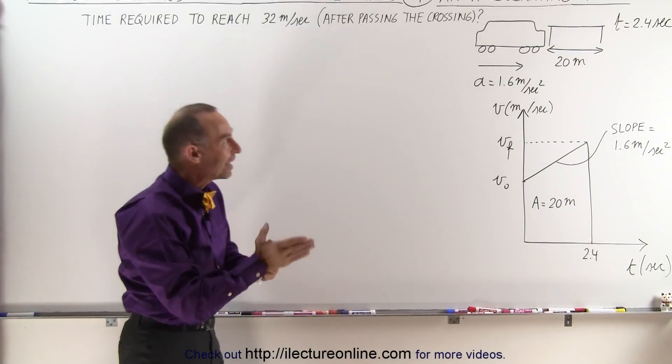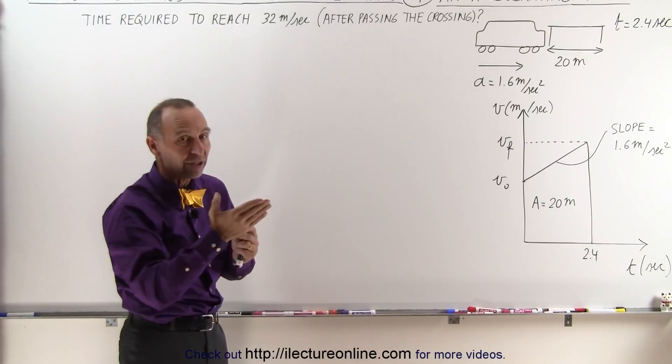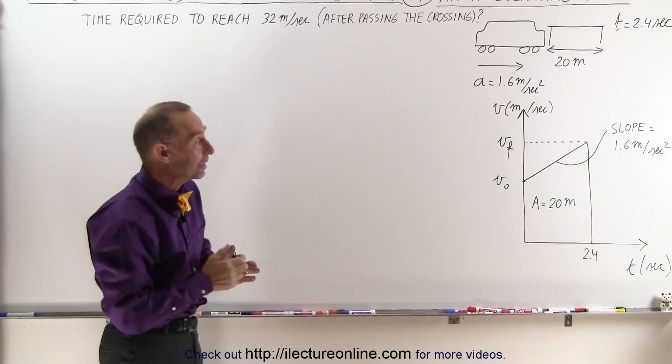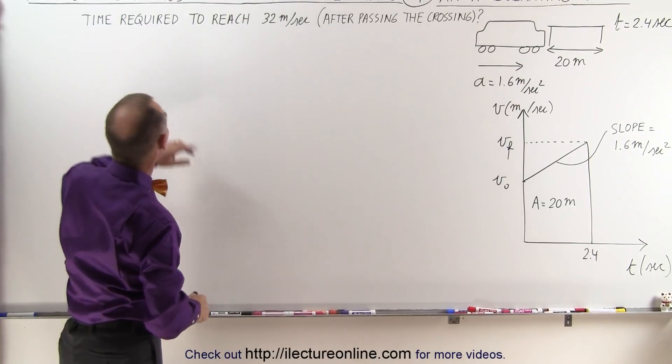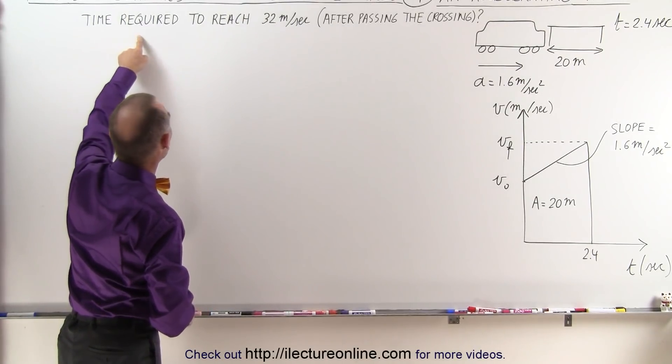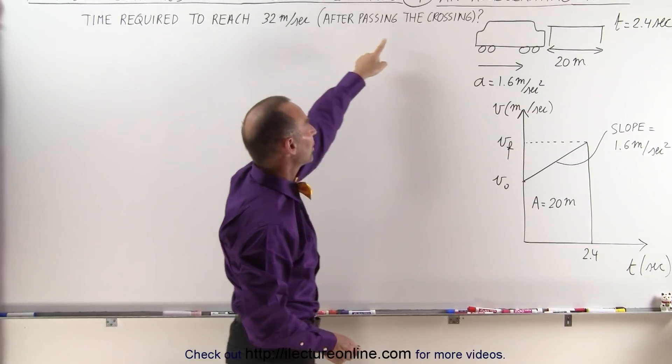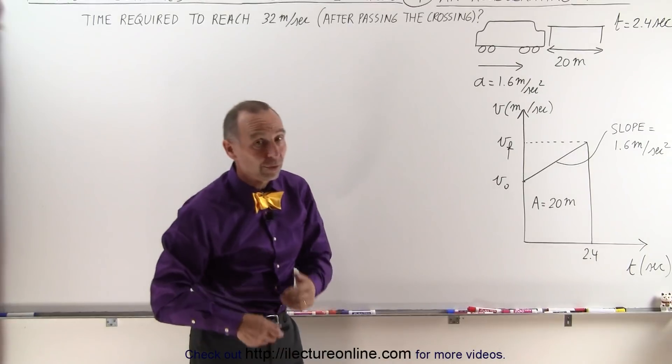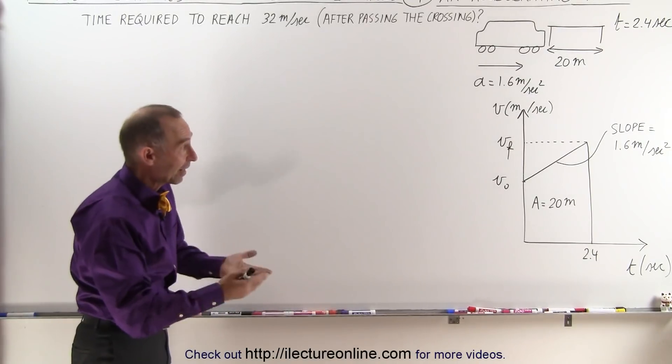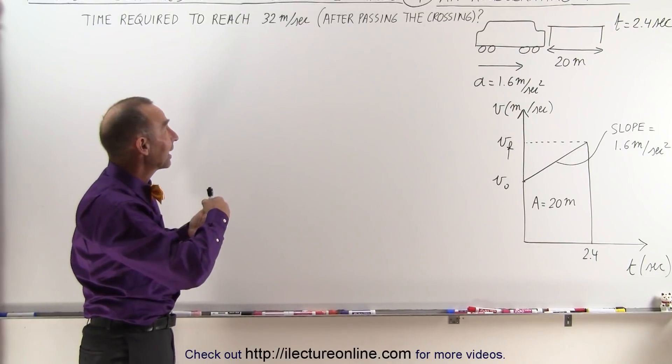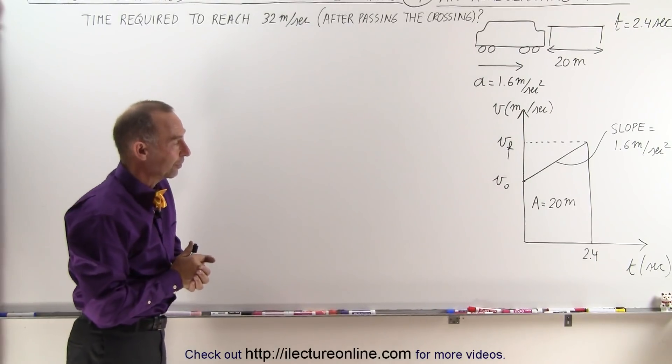What is not known is the initial velocity and the final velocity during that 2.4 seconds while the train is crossing the railroad crossing, and they're also asking us to find the time required to reach the speed of 32 meters per second after the train has passed the crossing. So we need to find the initial and final velocity, and then how long it will take for the train to get up to 32 meters per second.